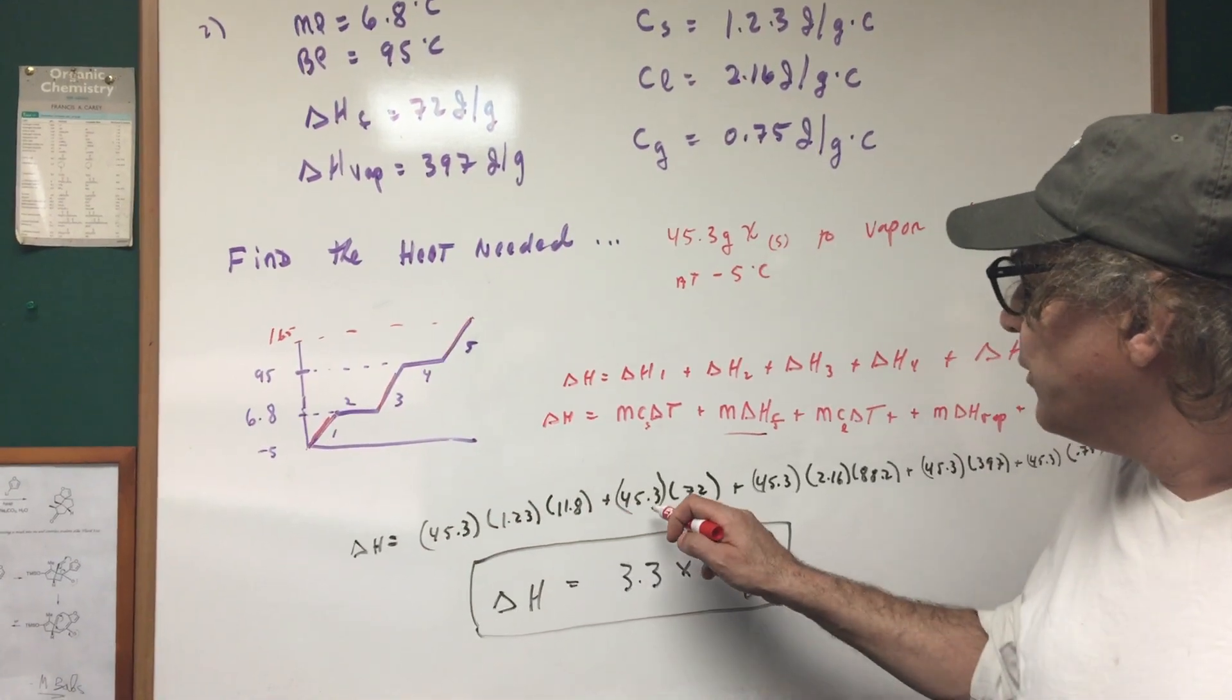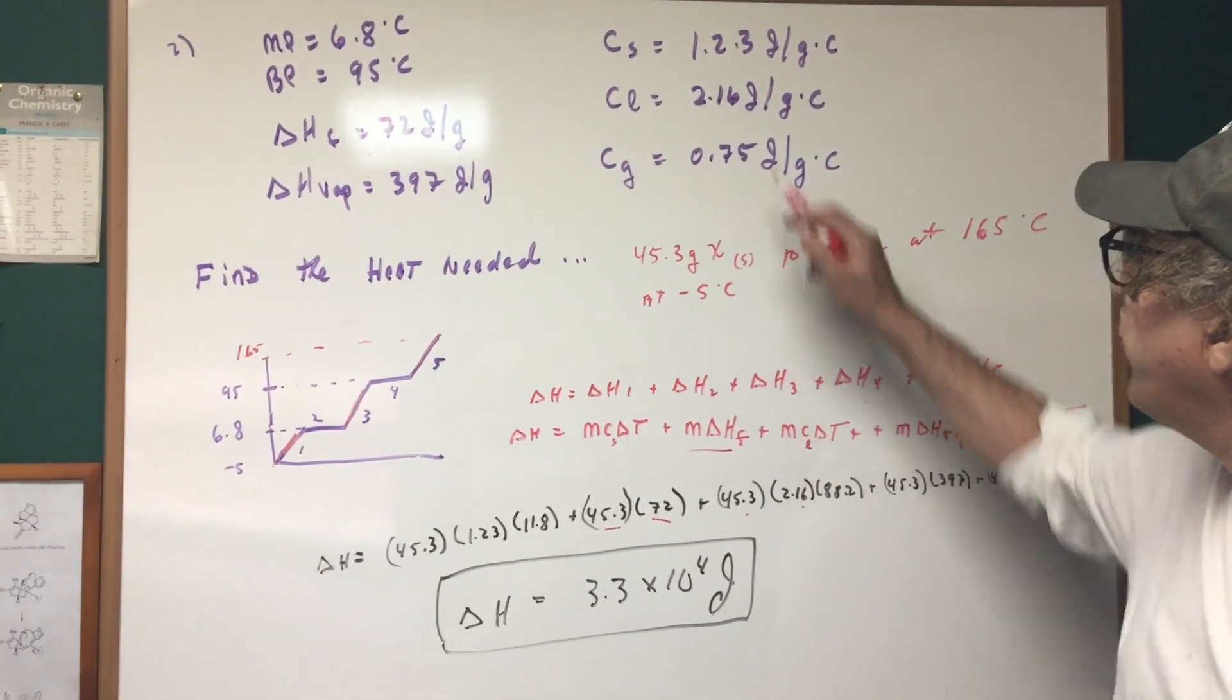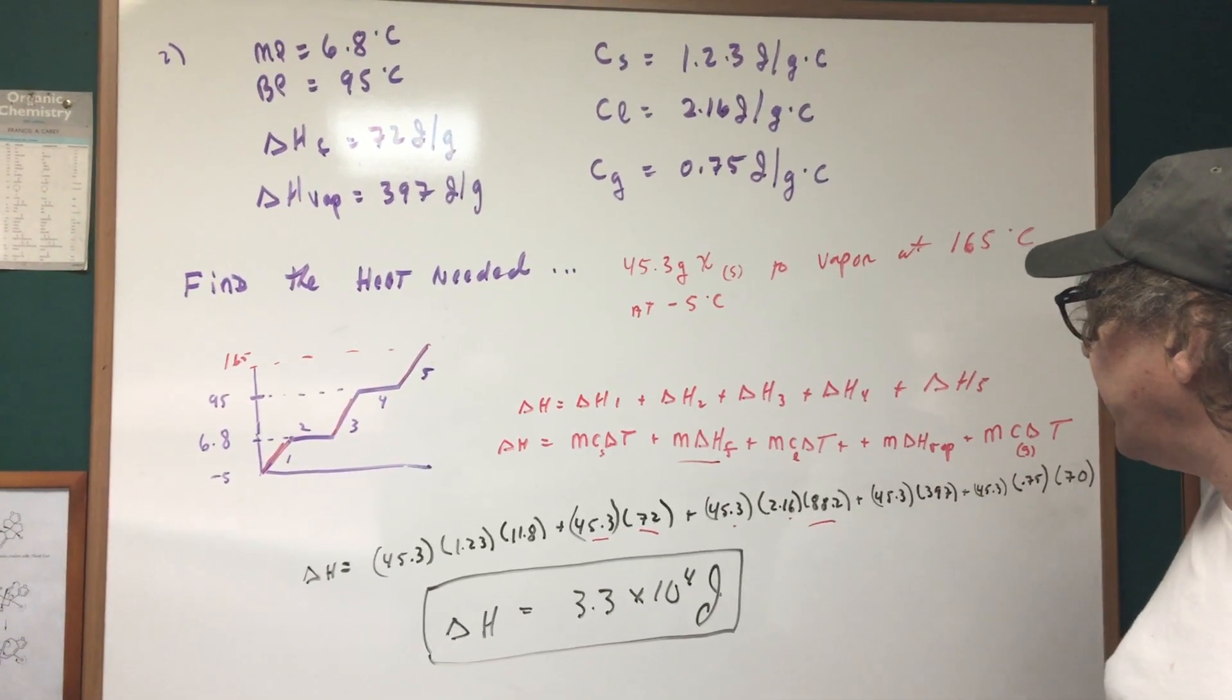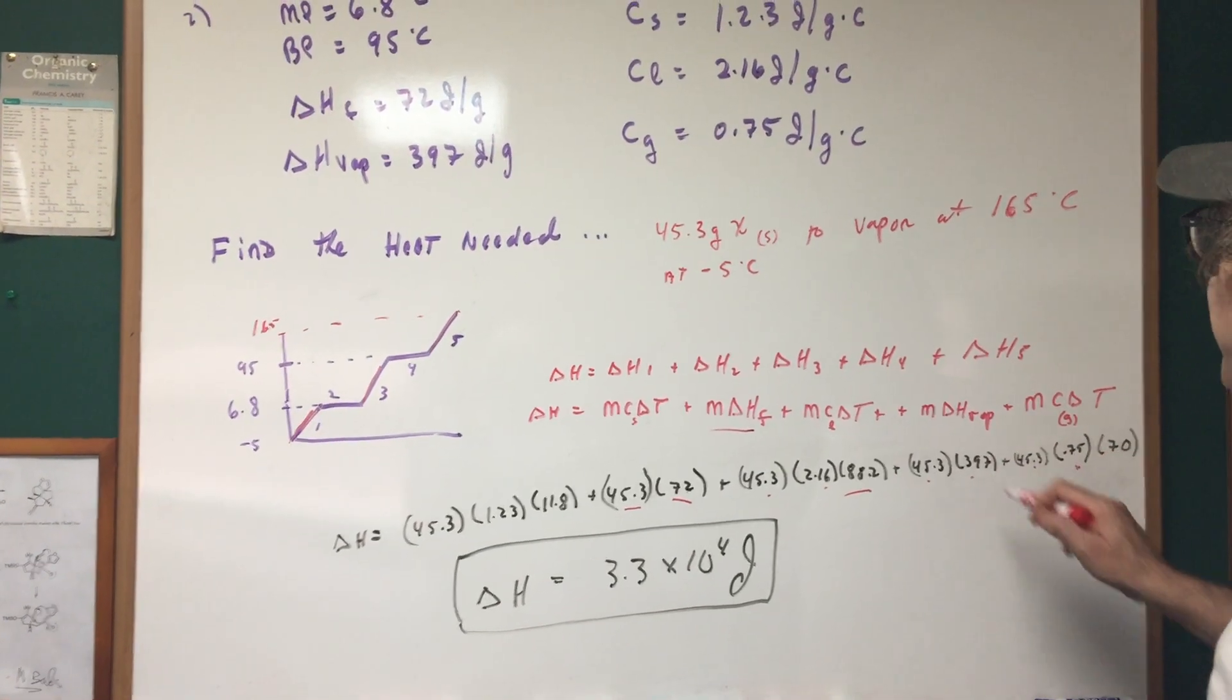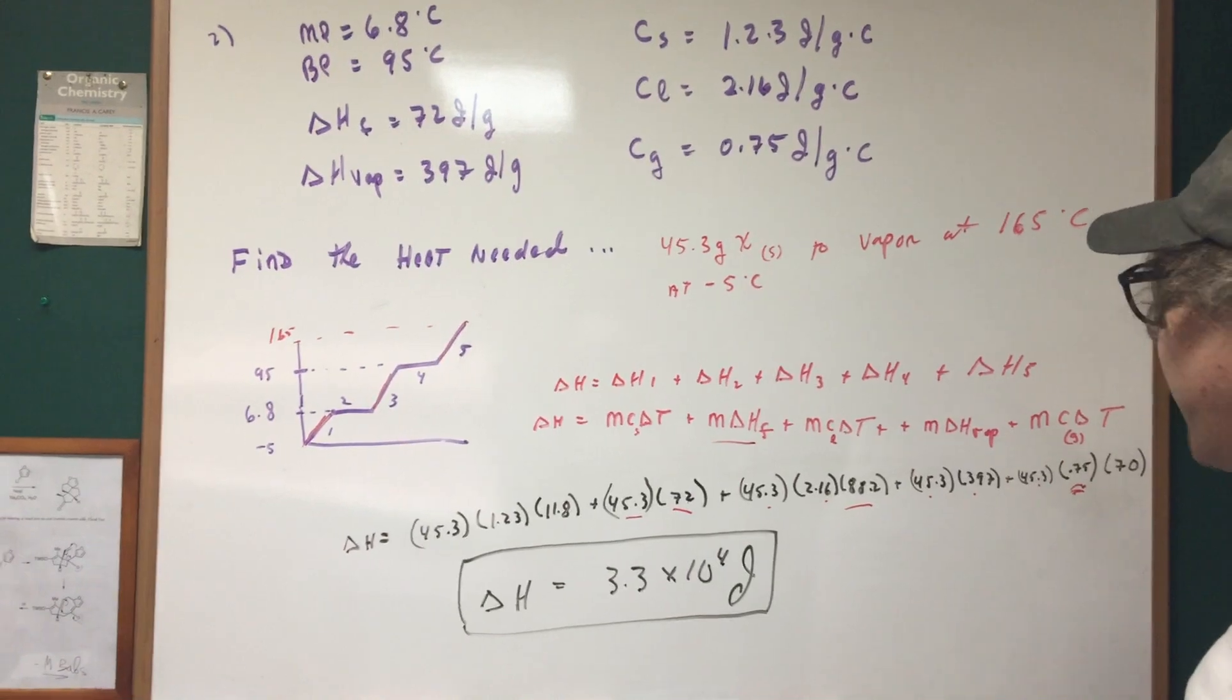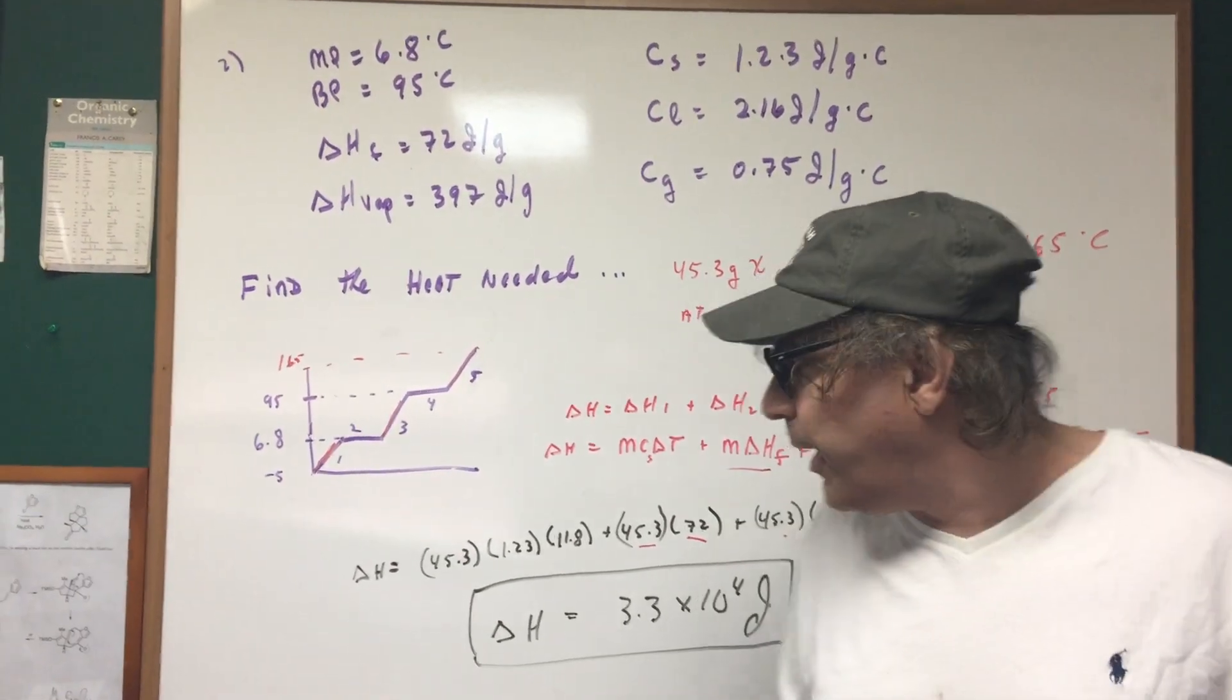There's the mass again, this represents the heat of fusion, there's my mass, this represents the specific heat of the liquid 2.16, and once again there's the delta T from 6.8 to 95 is a difference of 88.2. There's the mass heat of fusion mass, notice I'm using the specific heat now of the gas phase vapor phase, and then from 95 to 165 was a change of seventy. Adding them all together even though that would take long on the DAT, as long as you understand how to do it I think you're in good shape here. So the delta H came out to be 3.3 times 10 to the fourth.